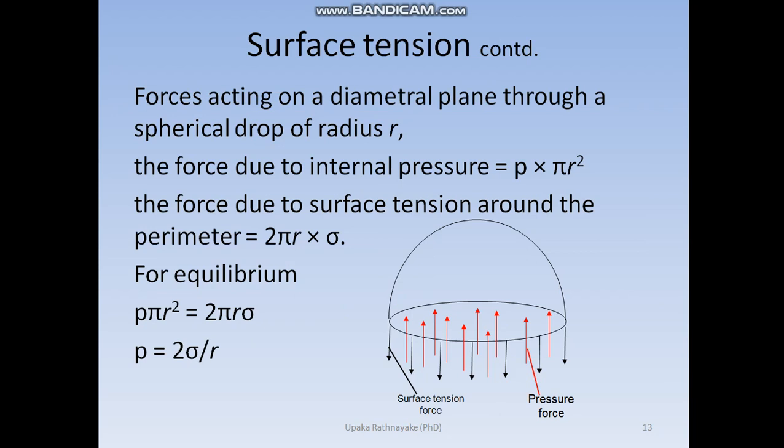Now let us understand the physics of a bubble. A bubble has surfaces of liquid with air inside. Let us consider a hemisphere of a bubble. We have two surfaces: one is the curved surface and the other is the flat circular surface of the hemisphere. This circular surface is balanced by forces. As you can see from this diagram, there should be an upward force acting on the flat surface, coming from the air pressure of the other hemisphere.